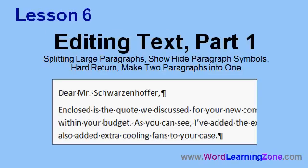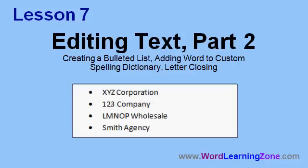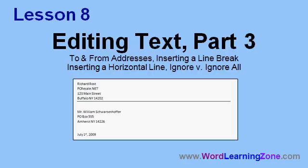In Lesson 6, we're going to learn about editing text — how to split large paragraphs into two, how to show and hide paragraph symbols and other non-printable characters, hard returns, and how to make two paragraphs into one. In Lesson 7, we'll continue editing text, learning how to create a bulleted list, add a word to our custom spelling dictionary, and put a closing on our letter. In Lesson 8, we'll put to and from addresses at the top of our letter, insert a line break instead of a paragraph break, insert a horizontal line, and learn the difference between ignore and ignore all in spell check.